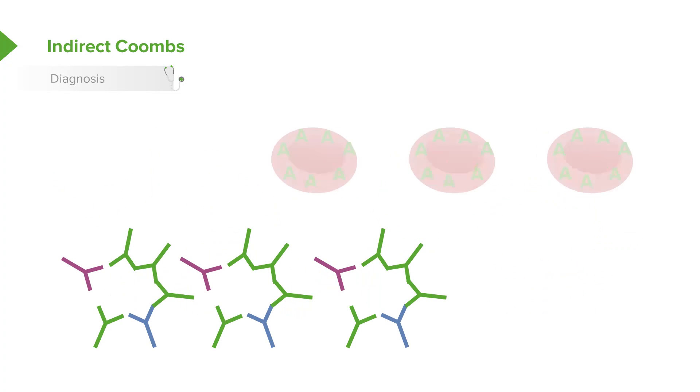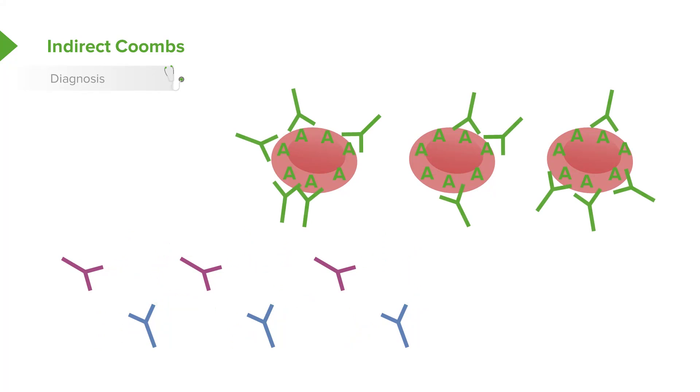We're going to take their serum and we're going to isolate it and we're going to now put it against a certain number of pre-donated cells. Person number one happens to have A positive blood.